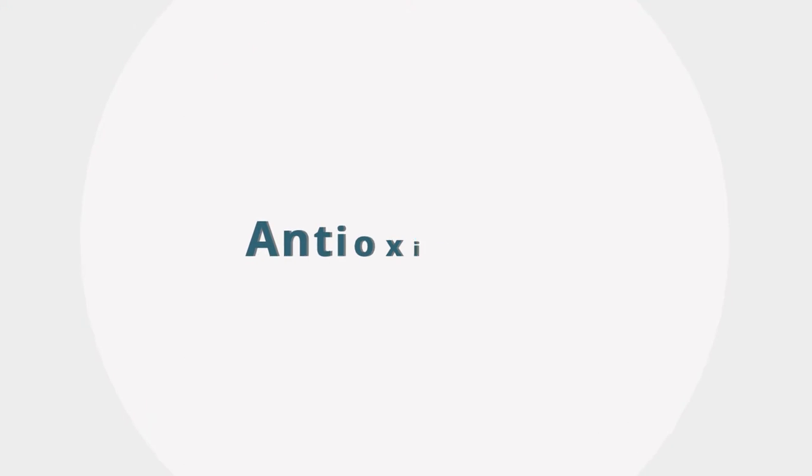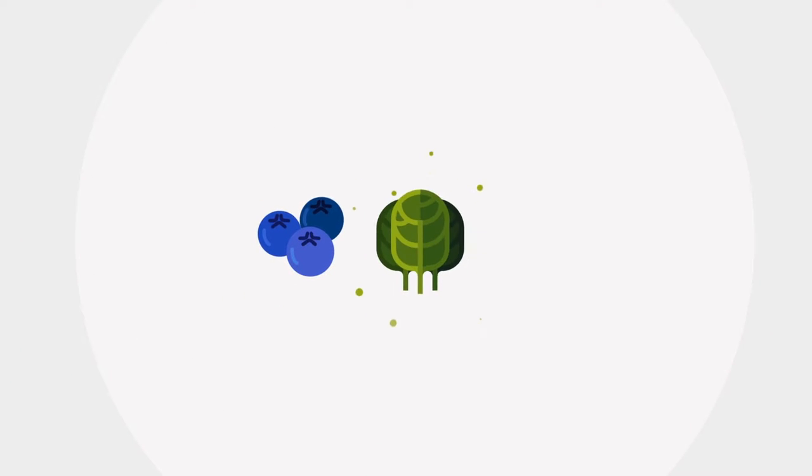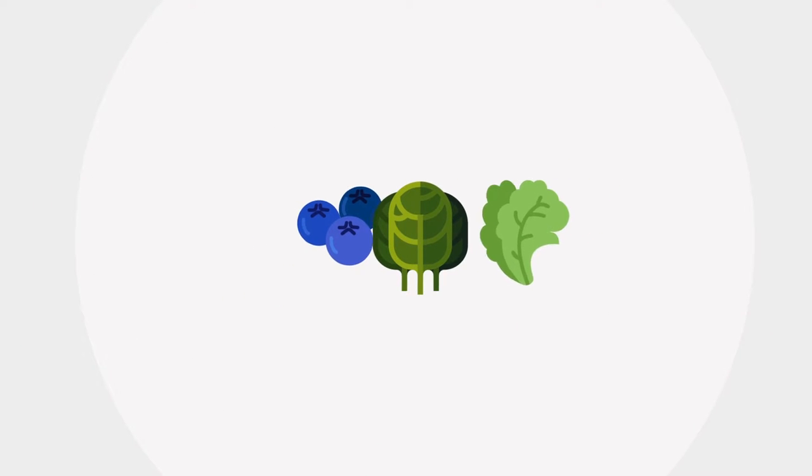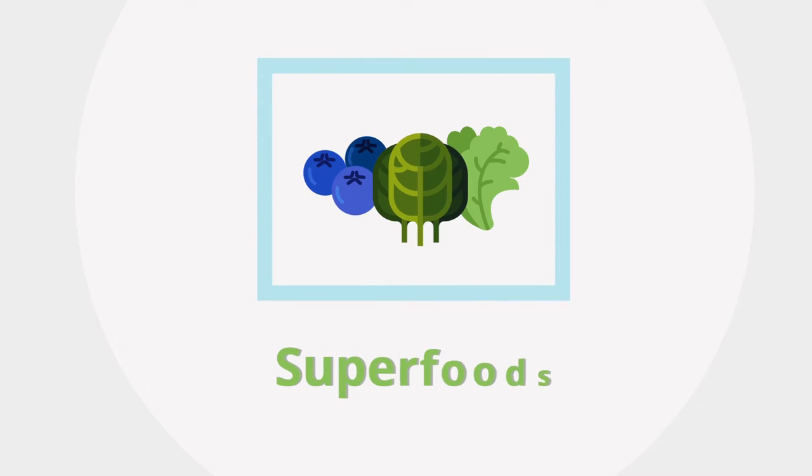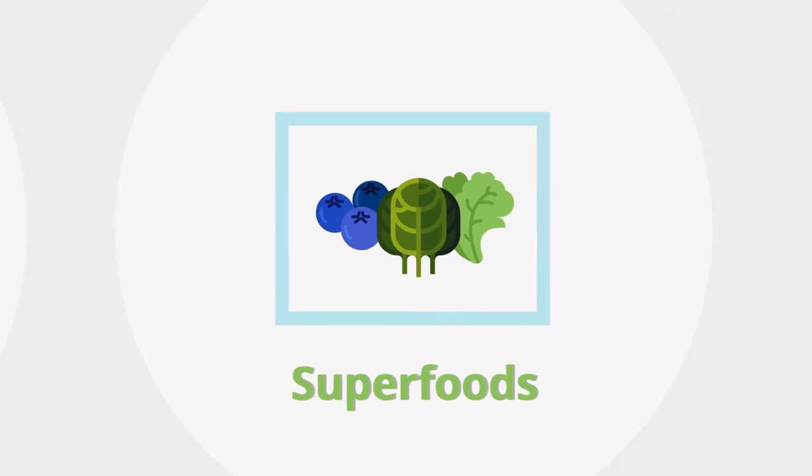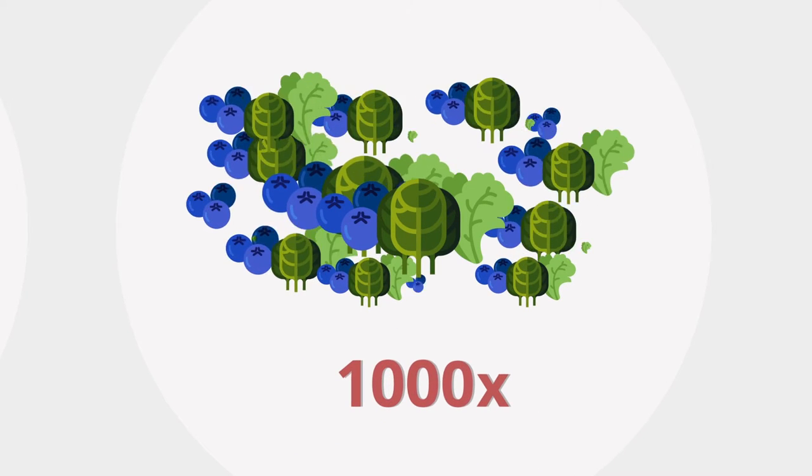The secret is antioxidants. Antioxidants are in many foods and vegetables that you commonly encounter. Foods that contain antioxidants are typically considered superfoods. Now imagine multiplying the antioxidant power of superfoods by 1,000 times.